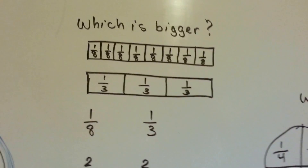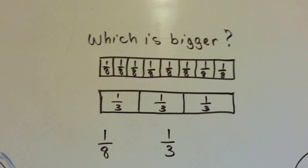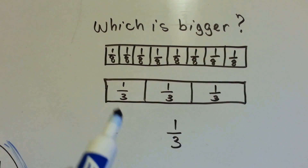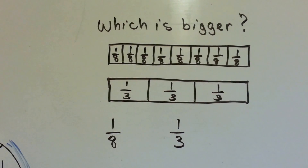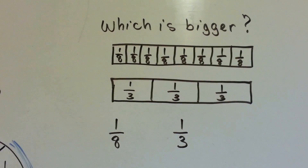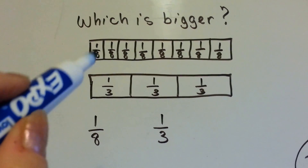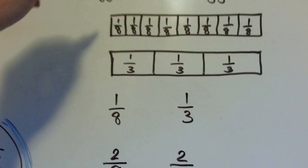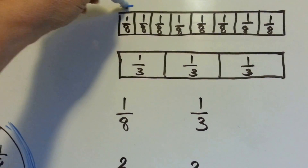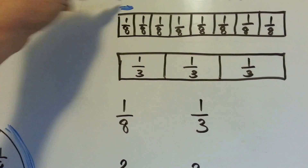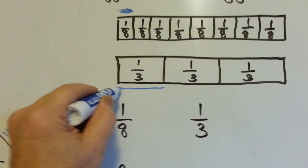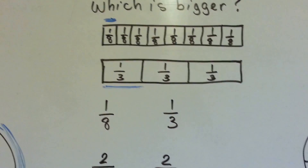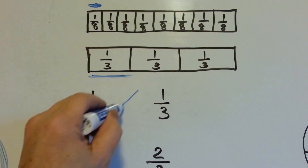Now which is bigger? Here's little eighths and here's thirds. We have 1 eighth or 1 third. Here's the space for 1 eighth. Here's the space for 1 third. 1 third is much bigger, isn't it?